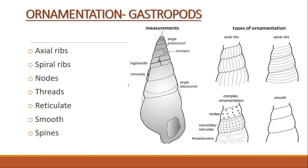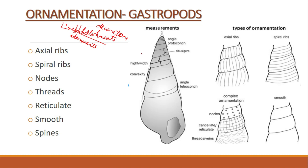When we look at ornamentations, we have different types. What are actually these ornamentations? These are nothing but embellishments or adornments — that is the literal meaning of ornamentations: decorations, something which is embellishing, adorning, or decorating the shell. There are some features, some structures in shells which are their embellishments and make the shell look more beautiful.